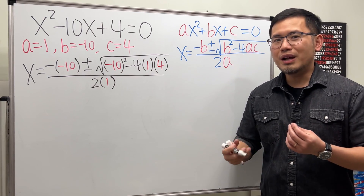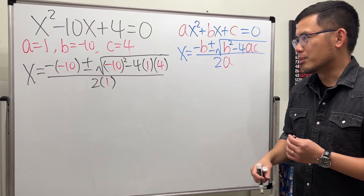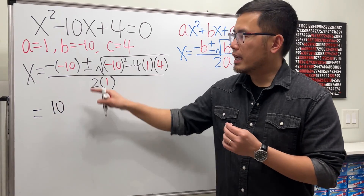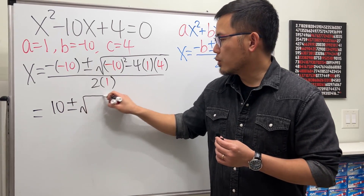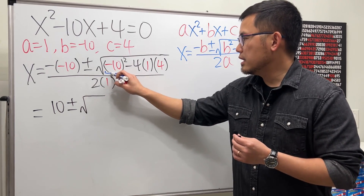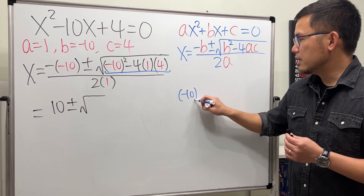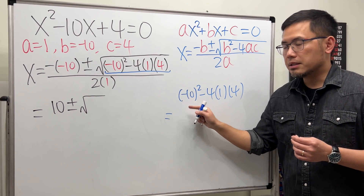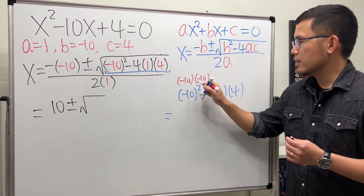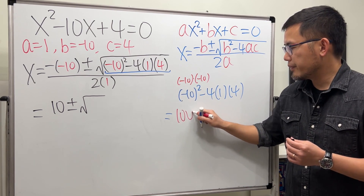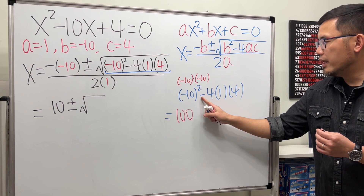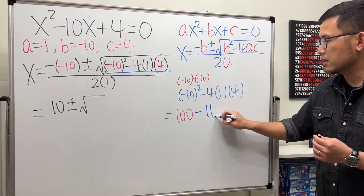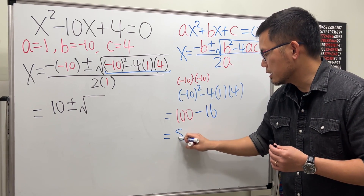It's a pretty big formula, so we have to take some time to practice and put some effort into remembering it. Let's work this out: negative negative 10 is positive 10, then we have the plus or minus. For the inside of the square root, let's work that out on the side. We have negative 10 squared minus 4 times 1 times 4. Negative 10 times negative 10 gives positive 100. Then negative times positive times positive stays negative: 4 times 1 is 4, times 4 is 16. So 100 minus 16 gives us 84.